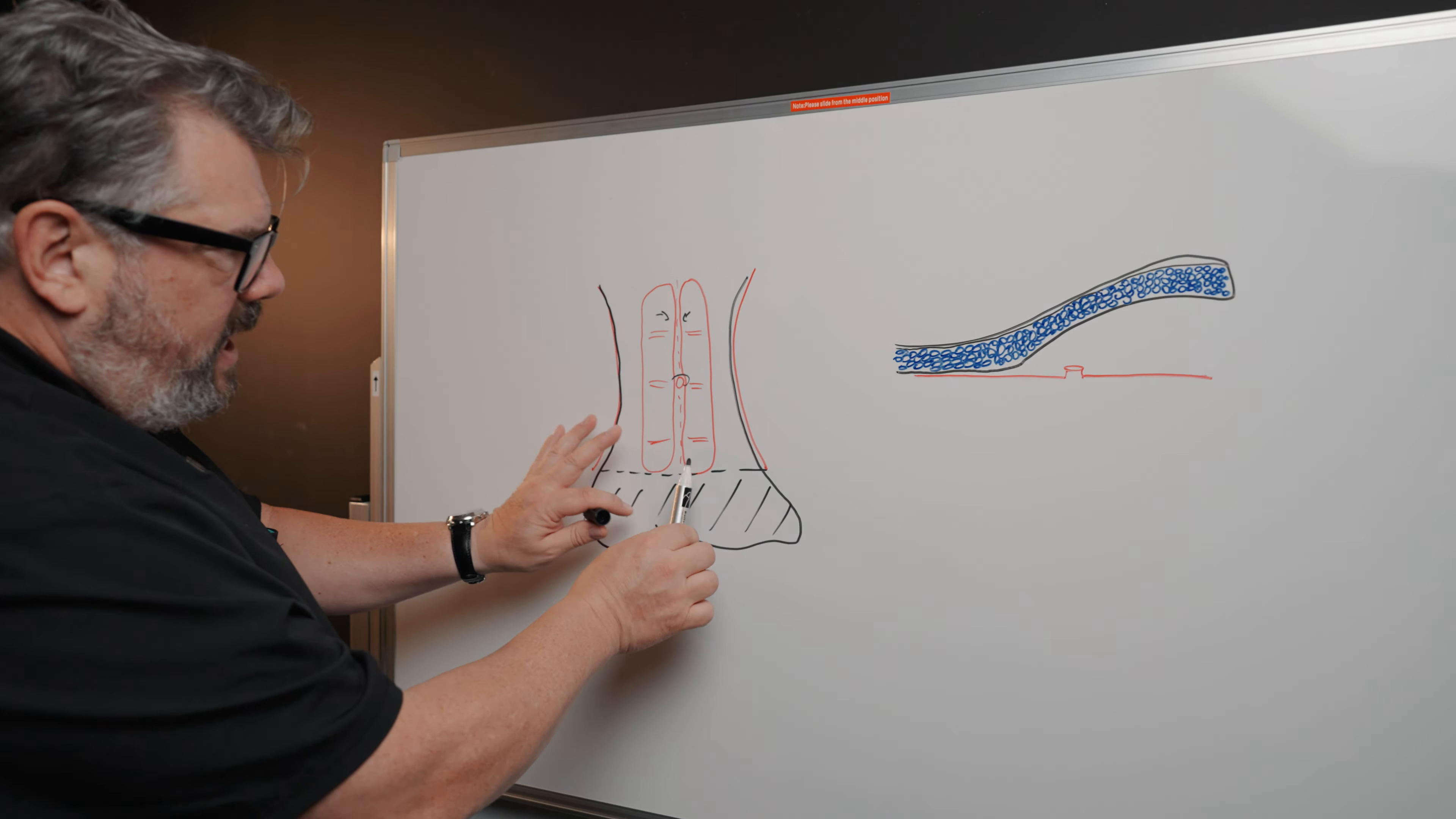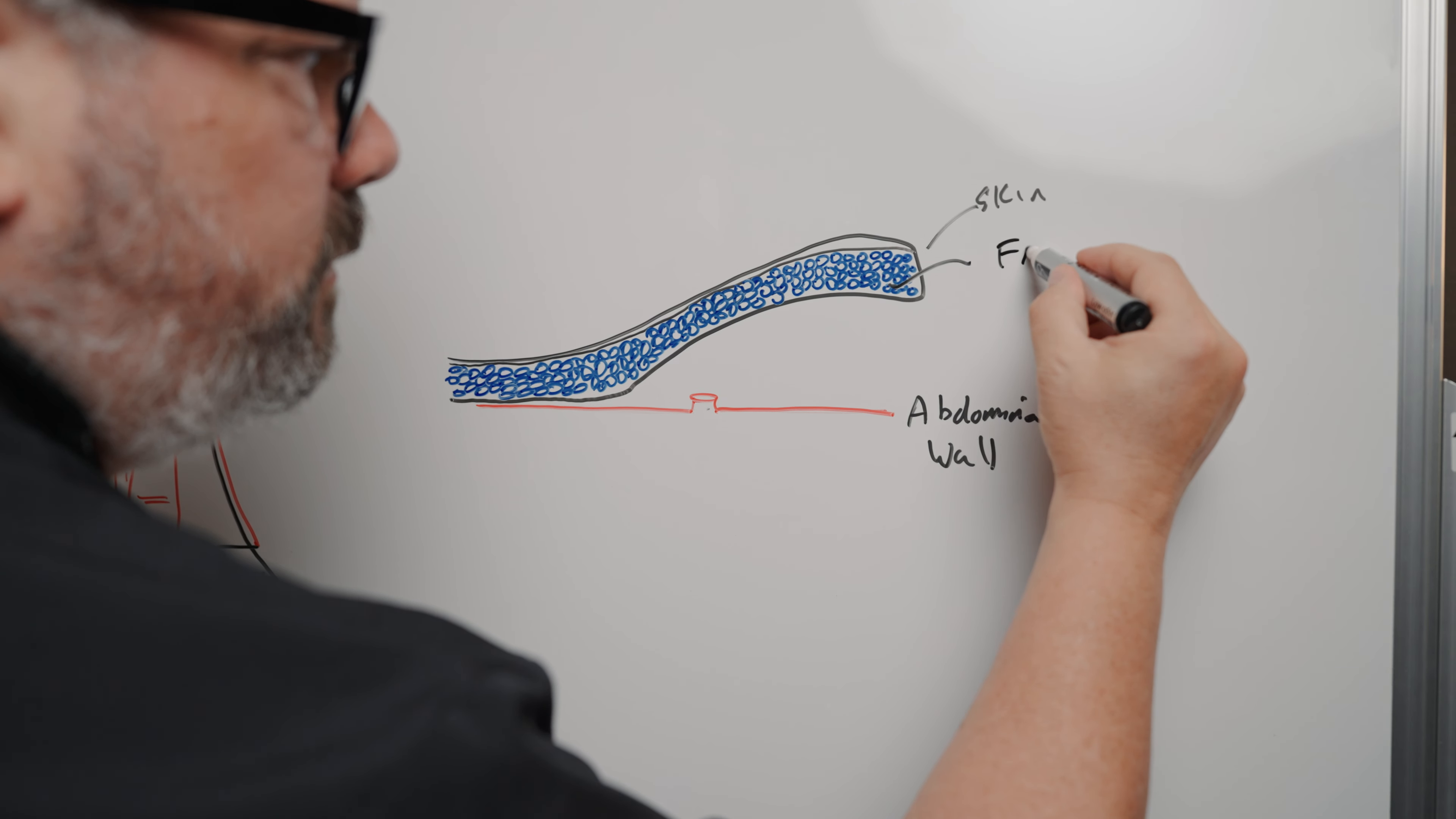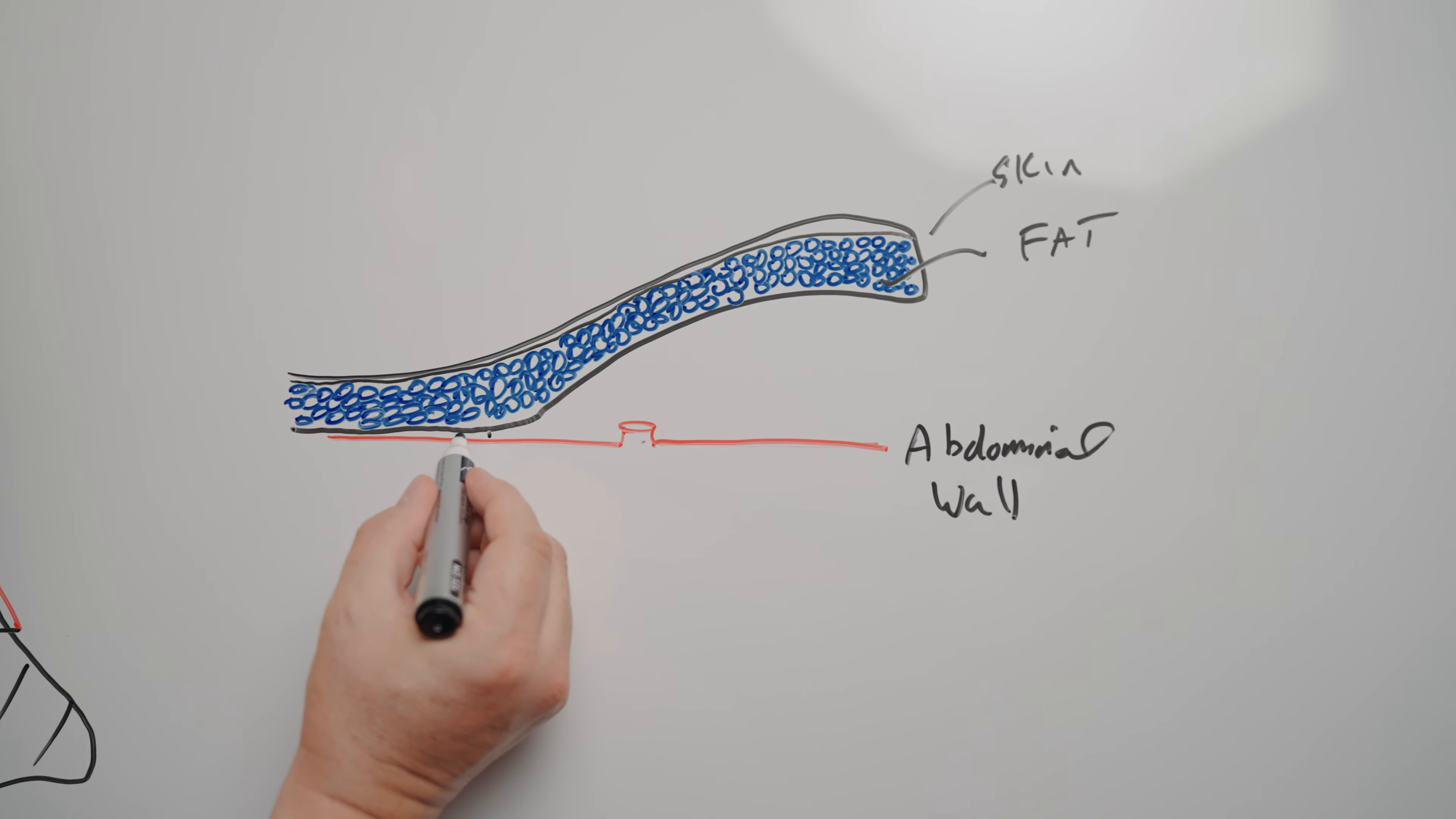In order to do that, what we have to do is we have to lift the skin and the fat off of the abdominal wall. So this redness here, that's your belly button. This red is the abdominal wall, just to get you oriented. And this is the overlying skin, and the blue represents the fat. When we do a tummy tuck, in order to get rid of this extra skin to throw it away, so we can leave patients with a nice flat tummy, we have to lift the skin and the fat up off of the abdominal wall. So we free it up. We free up all of these little connections here.